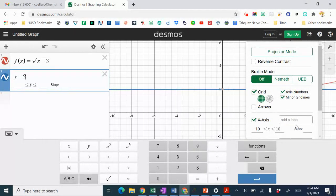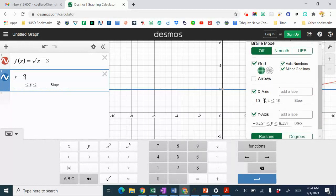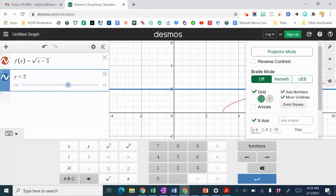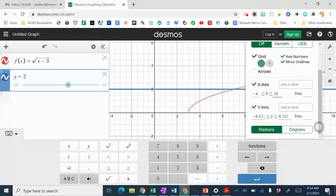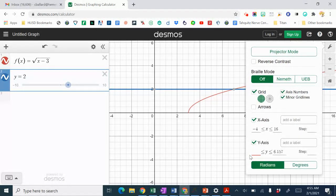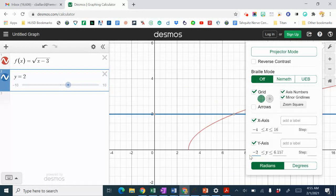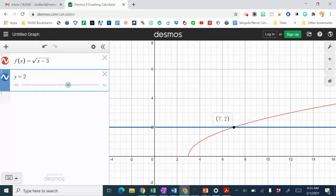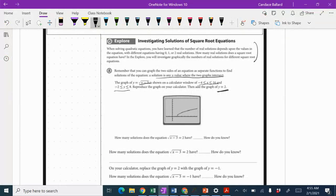I'm going to come over here and change the settings by hitting the little wrench, changing the viewing window to what they suggested. I want my x to be between negative 4 and 16, and my y should be between negative 2 and 8. Now you'll notice they only intersect one time with what I have right here. They intersect one time.